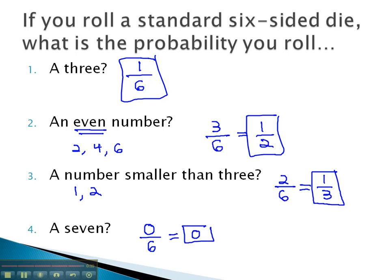To get our basic probability fraction, we simply make a fraction the number of things we want over the number of things that are possible.